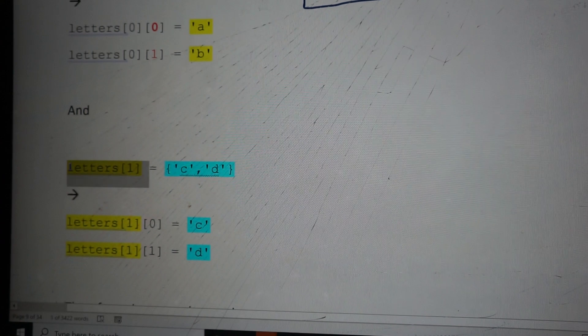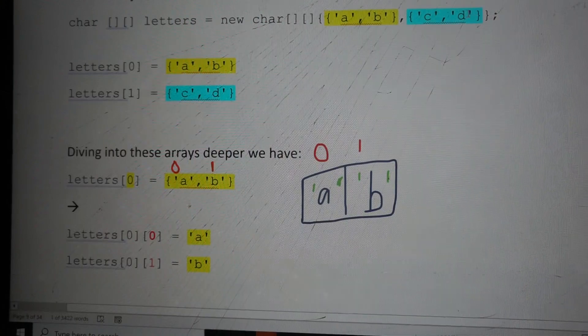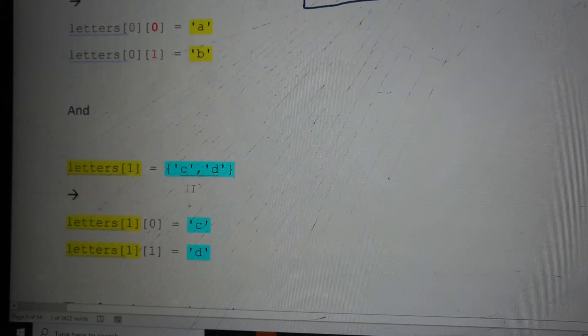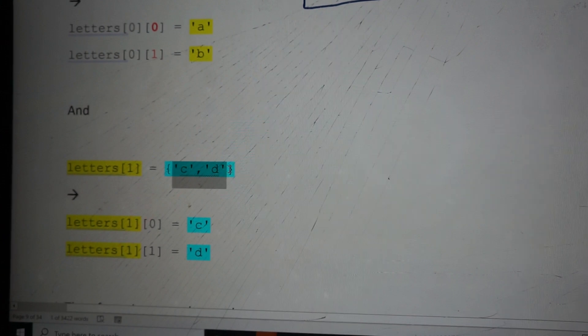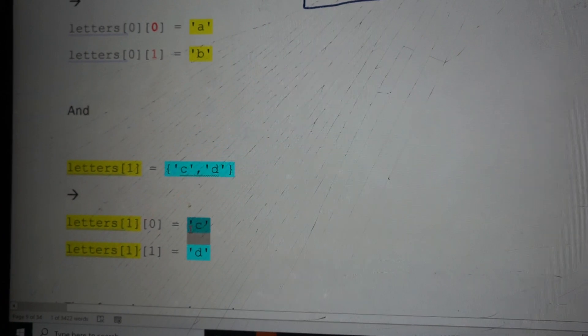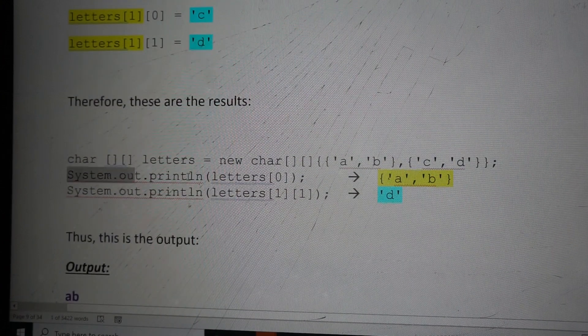Similarly, for letters[1], that is CD. So we've said that we want to get this. letters[1] will tell us that we're going to go to the second 1D array. And we see that it is C, and then D after that, which is 0 and 1.